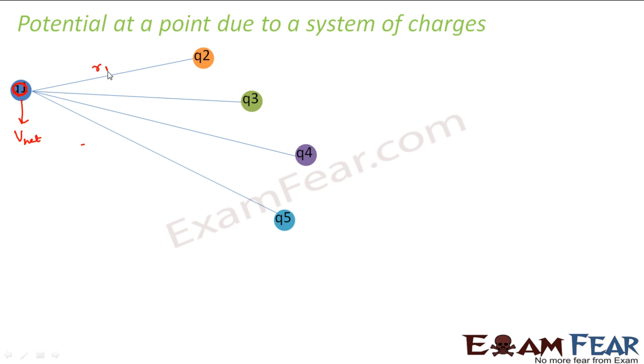So let us suppose the position vectors of each of these points is given by R1, R2, R3, R4. So these all denote the position vectors of each of these points. So what happens to the potential at point O?